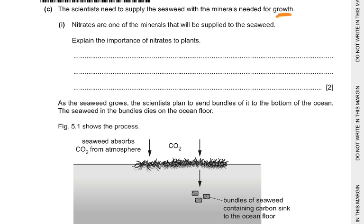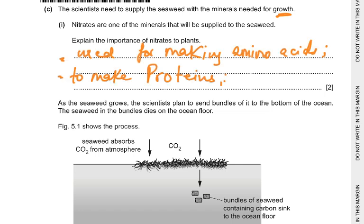Nitrates are used for proteins, but what are they also used for? That would be DNA and ATP. Nitrates are needed to make amino acids because glucose has carbon, hydrogen and oxygen, but we need nitrogen. So the nitrates from the soil are needed to supply the nitrogen part to the amino acid.